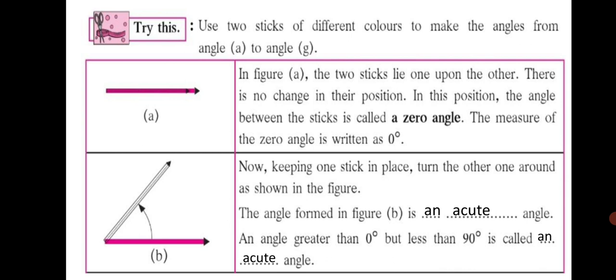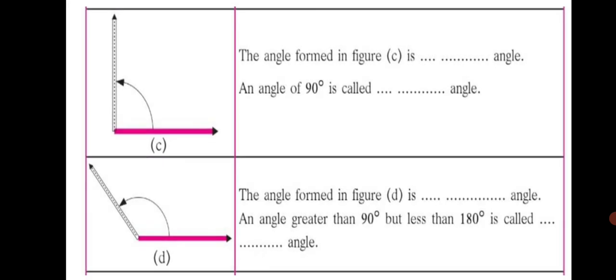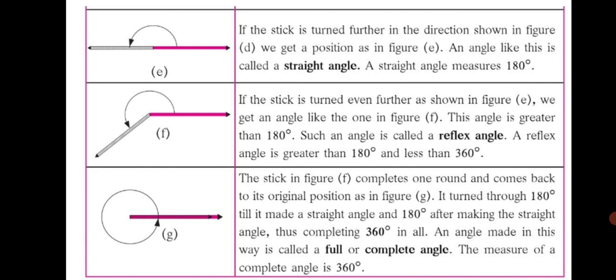The angle formed in figure D is an obtuse angle. An angle greater than 90 degree but less than 180 degree is called an obtuse angle. Now let's learn some more angles. In figure E, if the stick is turned further in the direction shown in figure D, we get the position in figure E. An angle like this is called a straight angle. A straight angle measures 180 degree. You can see the sticks form a straight line, with the measurement shown as 180 degree.